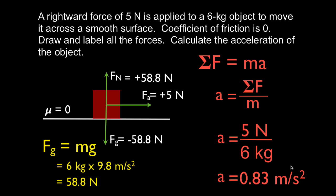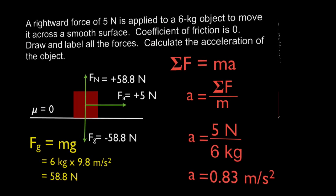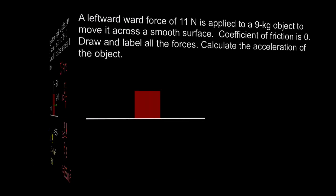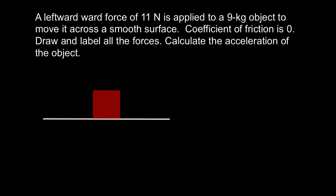So that's all there is to it — sum the forces up and you'll come up with the acceleration. Let's try one more. Similar case, no friction. An 11 Newton applied force, this time to the left. The mass of the object is 9 kilograms, and we're going to draw all the forces and calculate the acceleration.